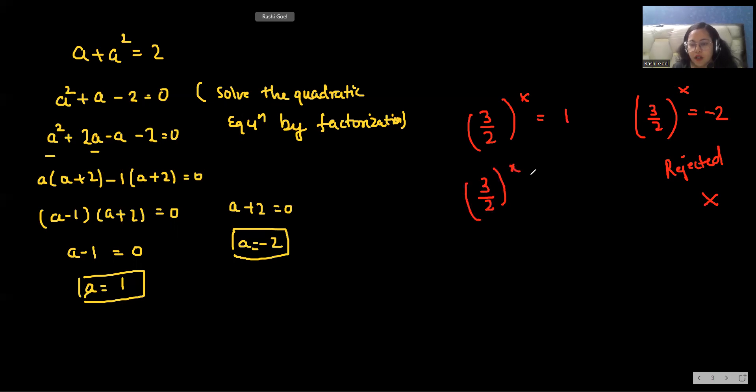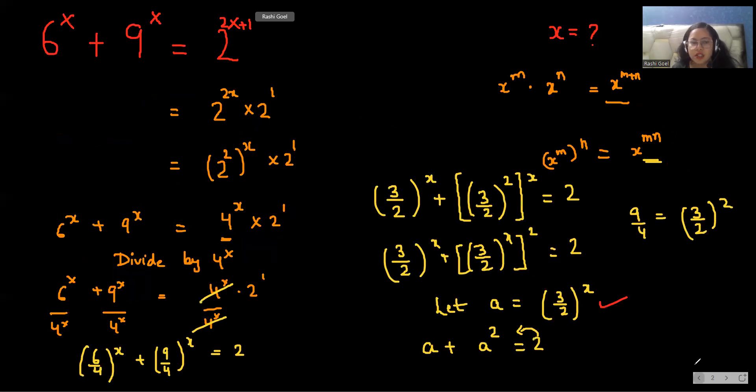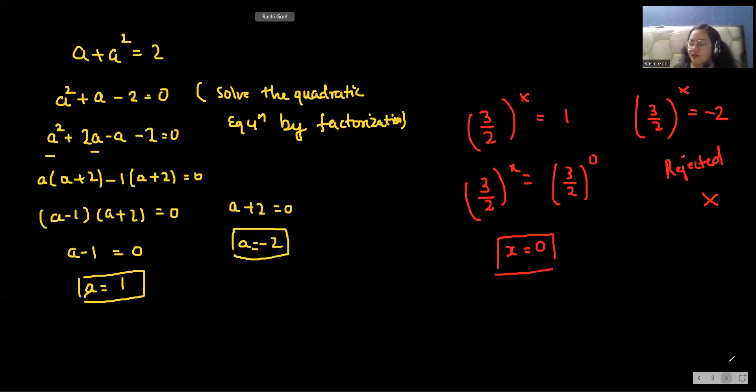Here the exponent is -2, so we reject this. Whatever exponent can be, cannot be negative. So we reject this. Now comes to this (3/2)^x. If any number is 1, so I can write the power as 0. So any equation whose power is 0, we'll take it as 1. So here x = 0. So what is the value of x for this equation? 0. I hope it's clear and you understand it. Don't forget to like, share, and subscribe to my channel. Thank you so much for watching this video.